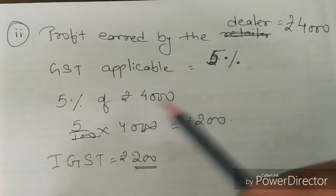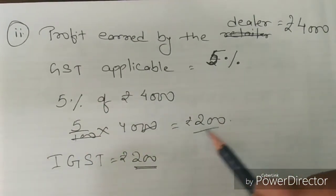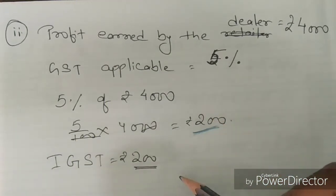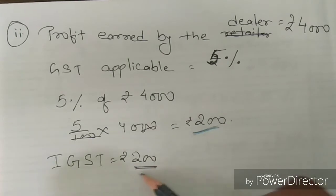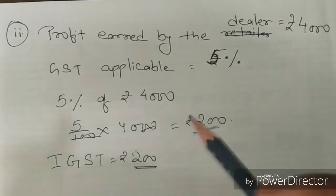GST applicable is 5%, so we will find 5% of 4,000. If we take that out, it will be Rs 200. And as it is interstate, it will be IGST of Rs 200.